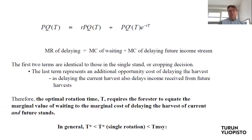How does the solution change if the price of timber P, which was assumed to be constant, changes? Notice that P is constant on both the left-hand side and both components on the right-hand side. So essentially this P cancels out, just as in the case of the single rotation model. In that sense, it might be tempting to think that a change in the price of timber doesn't really change anything.